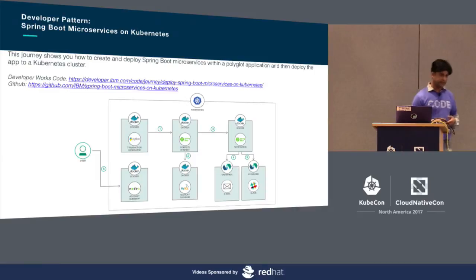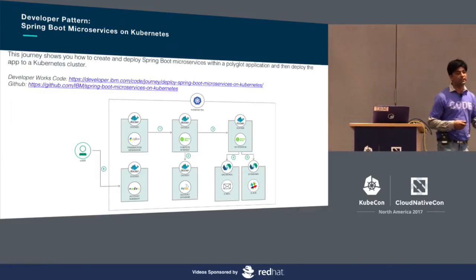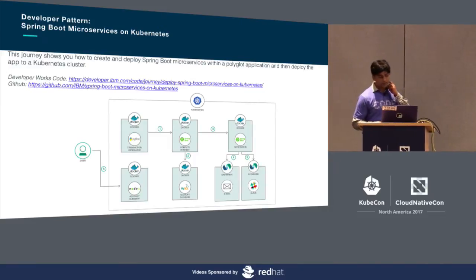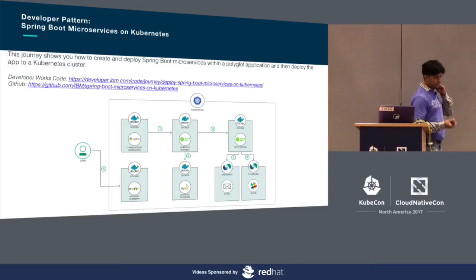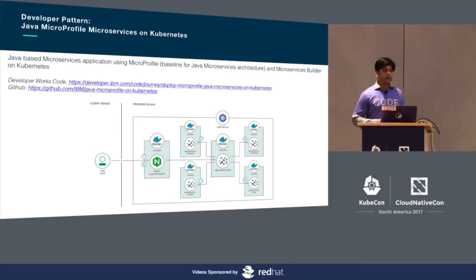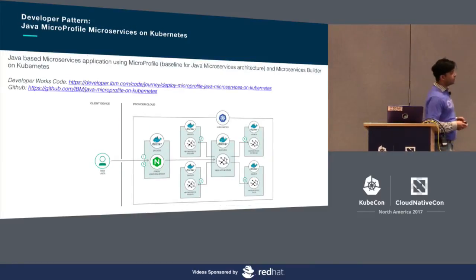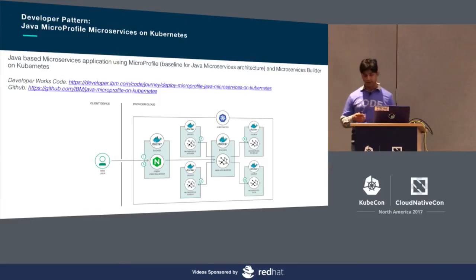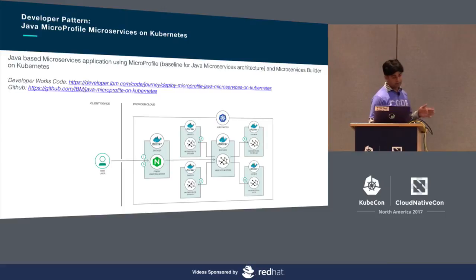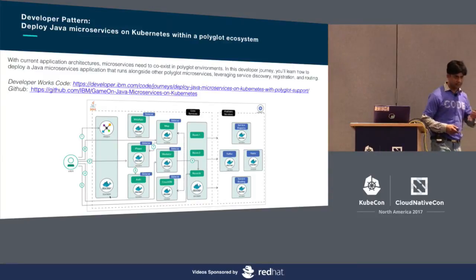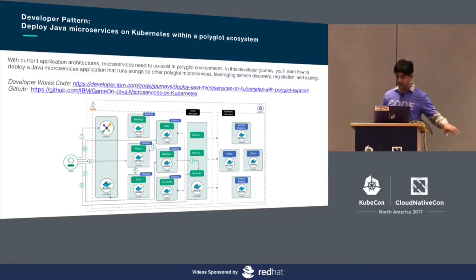For the Java and Spring Boot fans, we have a pattern showing how you can run Spring Boot microservices on top of a Kubernetes cluster, including how to use functions with the popular open source OpenWhisk, which is part of the Apache Foundation. There is also a pattern for MicroProfile, a Java EE framework backed by Red Hat, IBM, Fujitsu, and others. And if you are in a polyglot environment with microservices written in multiple languages, there is a pattern to get you started there as well.